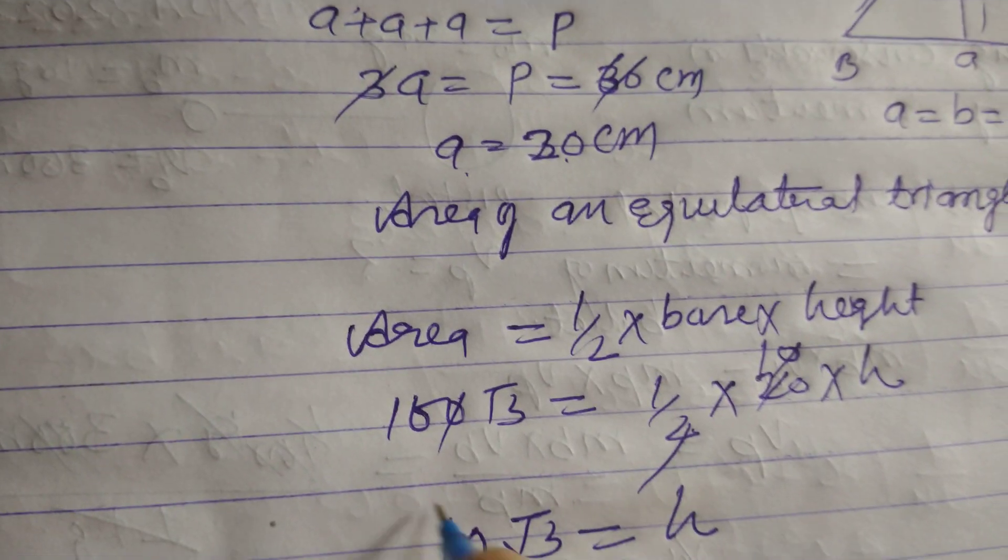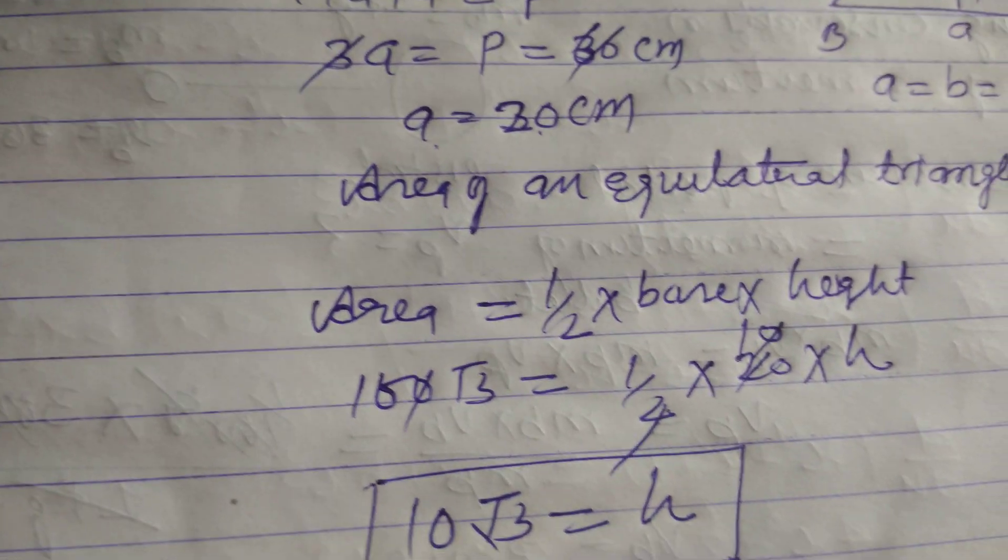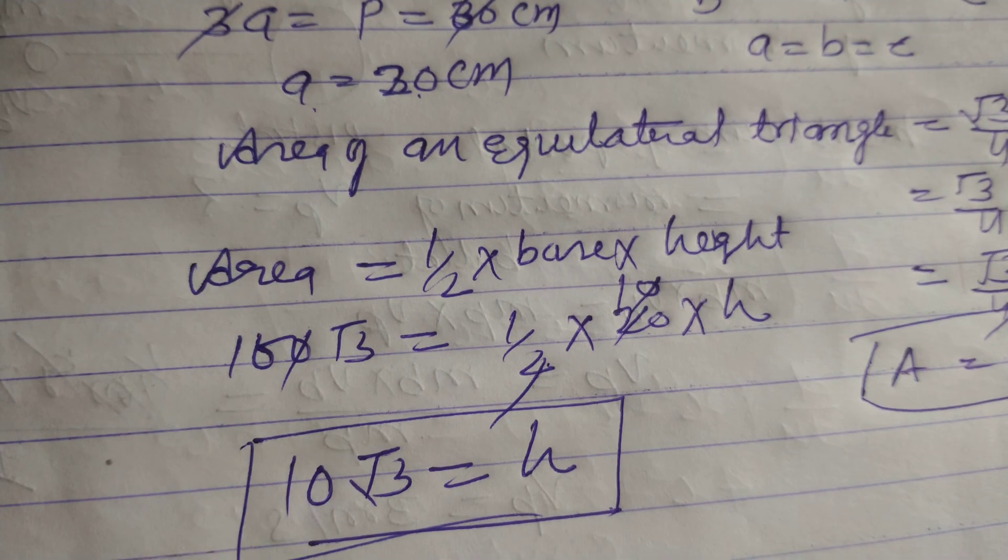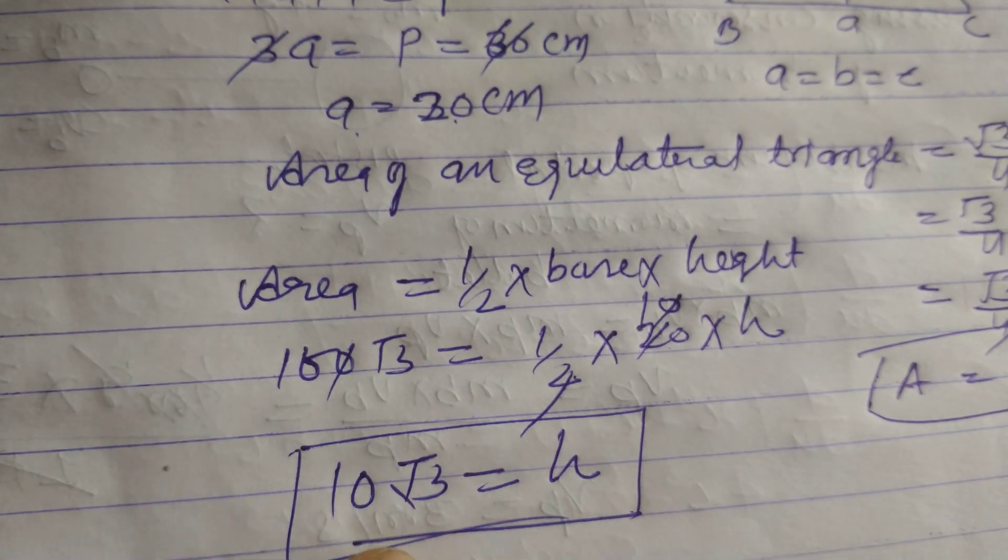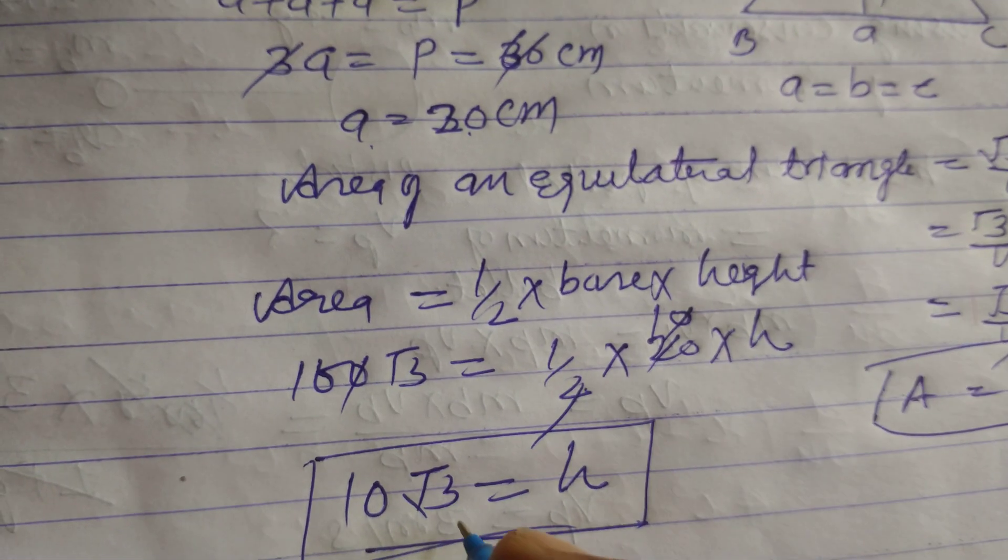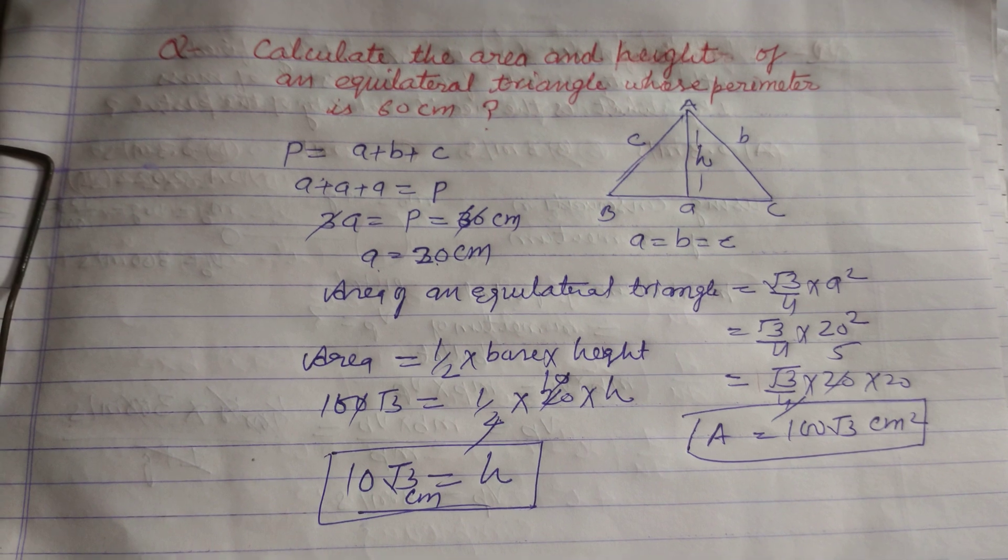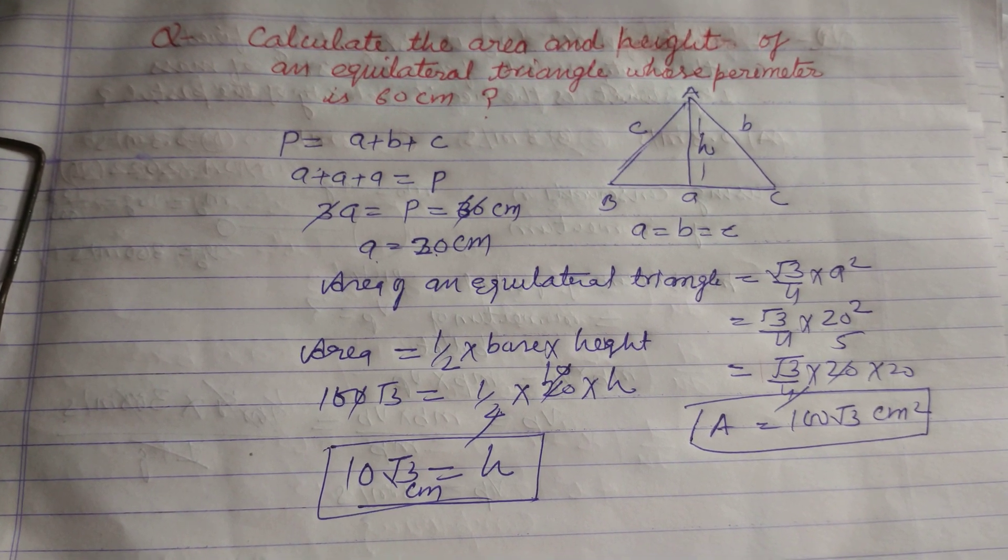So two answers which we want to find out are 100 square root 3 centimeter square and height is 10 square root 3 centimeter. So students, in this way we solve this problem. I hope you got it. Please like the video, subscribe the channel, and make comments.